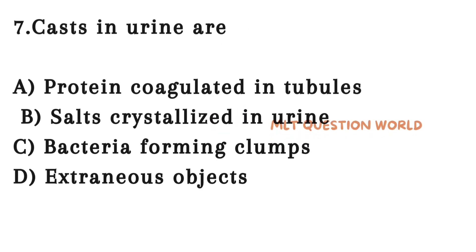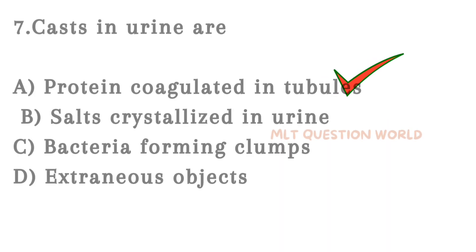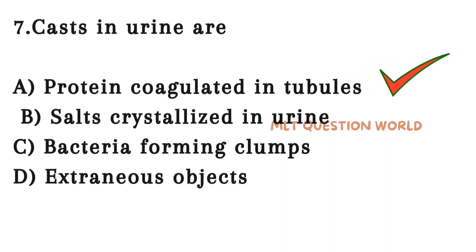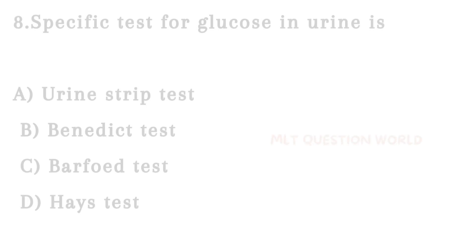Next question. Casts in urine are: Option A. Protein coagulated in tubules, Option B. Salts crystallized in urine, Option C. Bacteria forming clumps, Option D. Extraneous objects. The right answer is Option A — protein coagulated in tubules. Tamm–Horsfall protein coagulated in tubules forms casts.